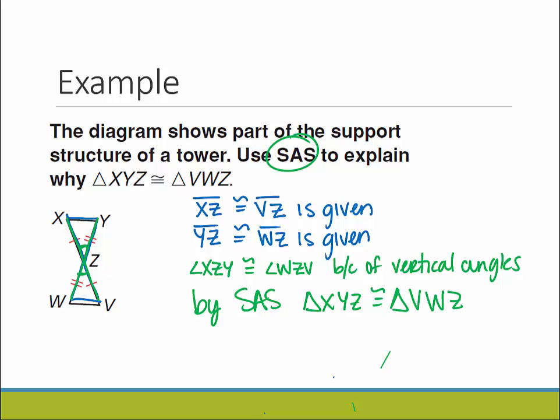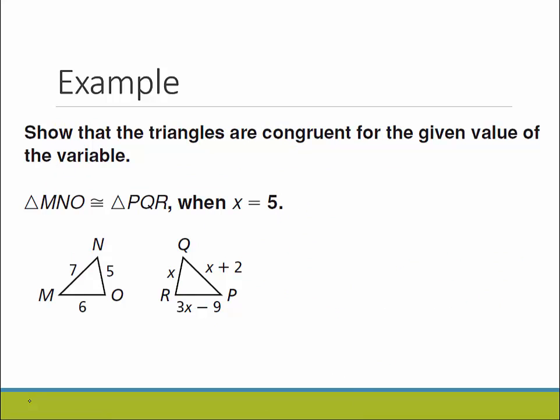Still doing proofs, but way easier than before because we don't have to prove that all six things are congruent anymore. Show that the triangles are congruent for the given value of the variable. Triangle MNO has actual side lengths 7, 5, and 6. But QRP has just variables in it.